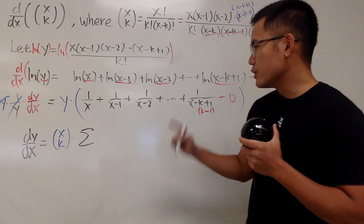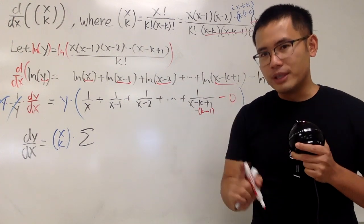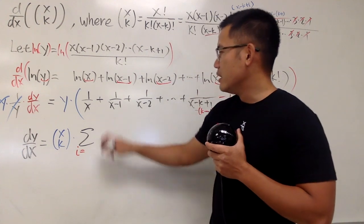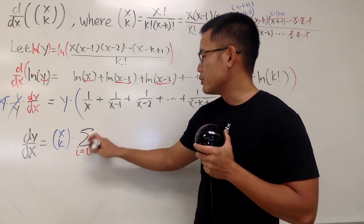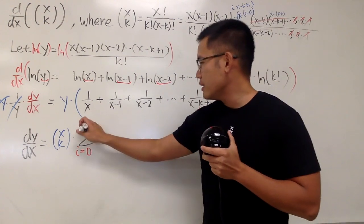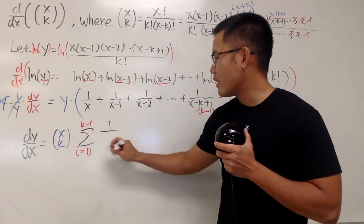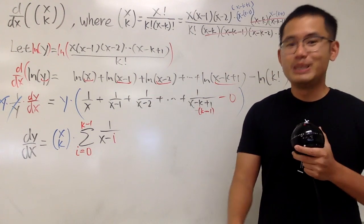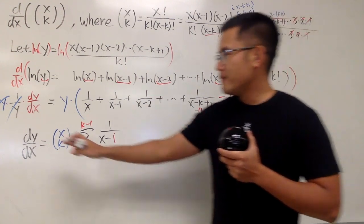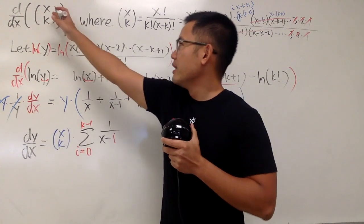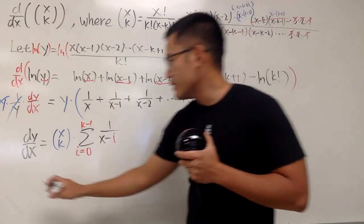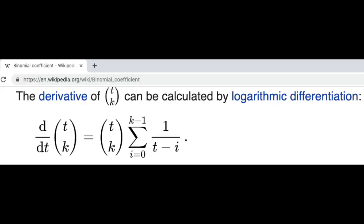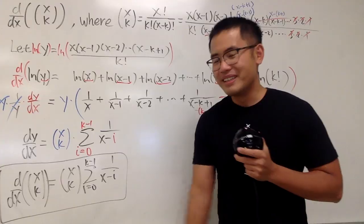So I will just pick another index that's i. Don't be too excited. I'm just saying i as an index, not the imaginary number. Minus 0, so we go from 0 to k minus 1. And we have 1 over x minus this i. Just like that. And dy/dx is differentiating d/dx of x choose k. So finally, I will just put this down. It's really cool when you see it like this. That's it. Really cool, huh? Wow!